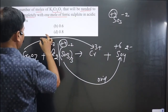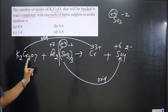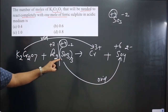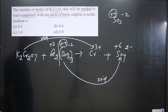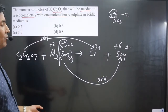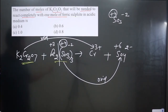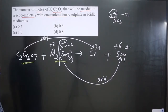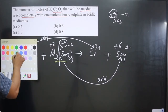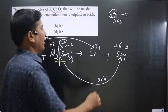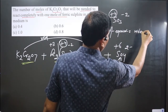We can apply the concept of number of equivalences. We don't need to fully balance this equation. The key principle is: number of equivalences of K₂Cr₂O₇ equals number of equivalences of ferric sulfite. The formula is: equivalences = moles × n-factor value.